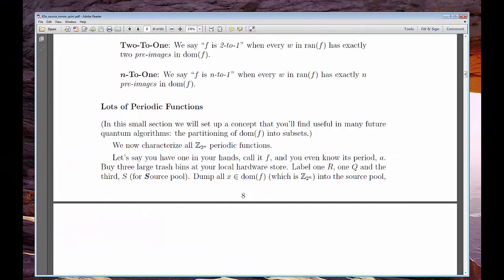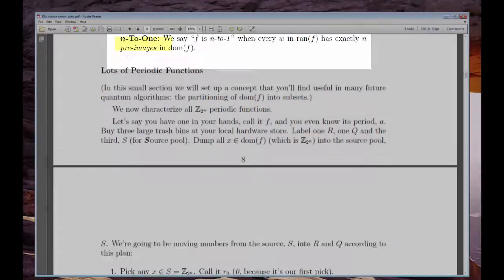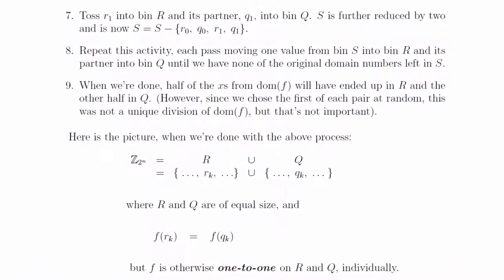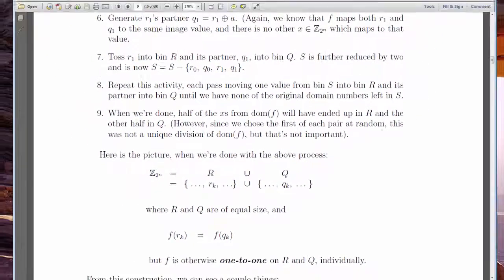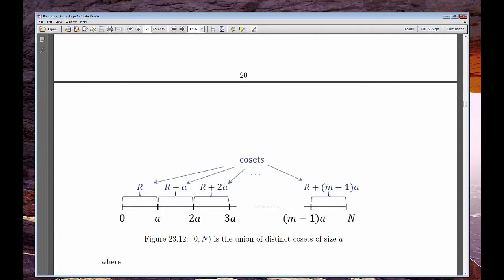Among other things, Z₂ⁿ periodicity endows functions with the property that they're 2 to 1, which says that the function can be used to separate the domain into two equal parts, or cosets. This partitioning is not only key to the solution, but a warm-up for the n-to-1 partition that we'll come across in two weeks when we get to Shor's period finding.